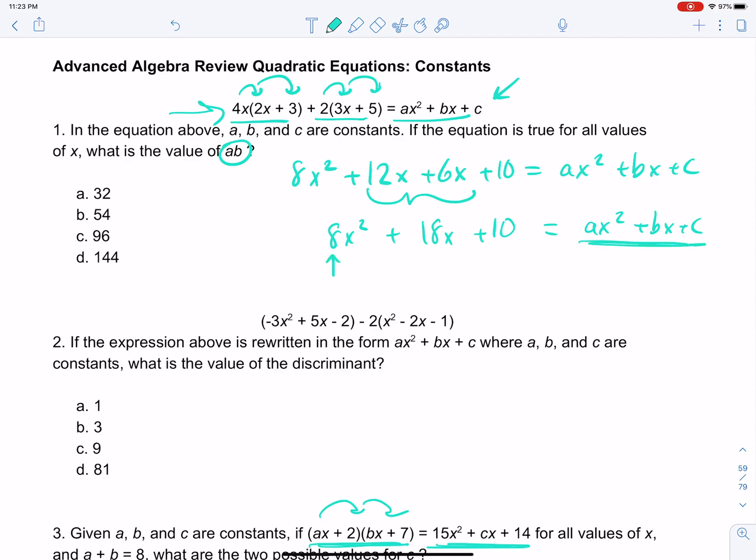And so we just know that this is our a, this is our b, and this is our c. And it's asking for a times b, which would be 8 times 18, which is 144, answer choice d.